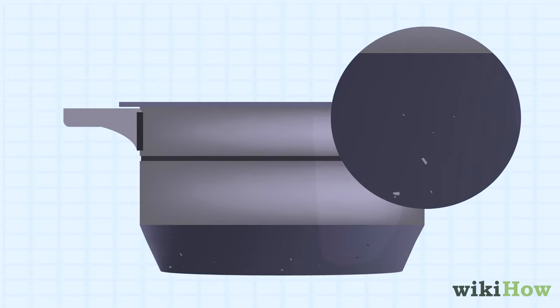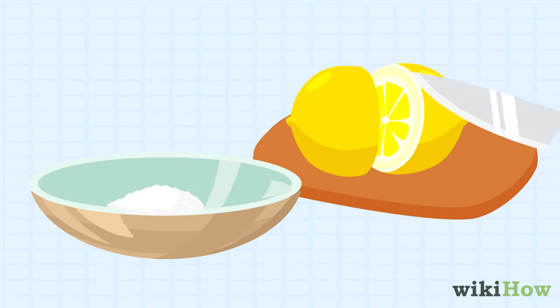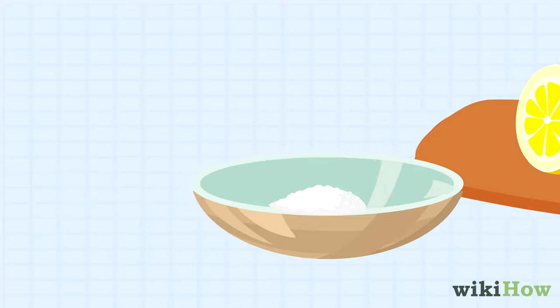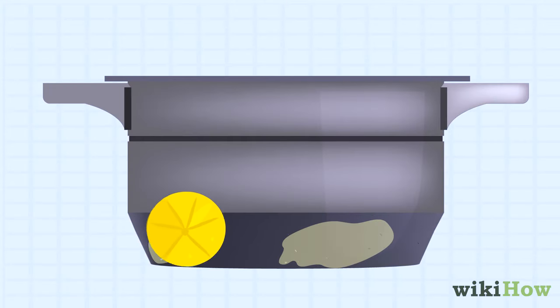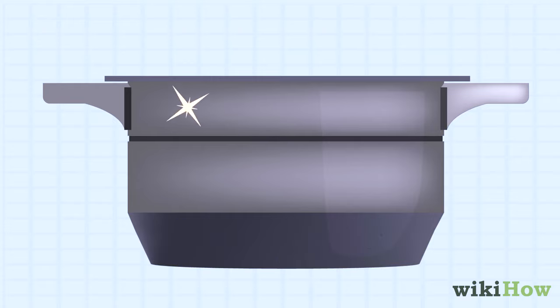For stubborn spots, cut a lemon in half and dip one of the halves in some salt. Then, rub the salted lemon against the oxidation. The acid from the lemon mixed with the salt's abrasiveness should remove most stubborn stains.